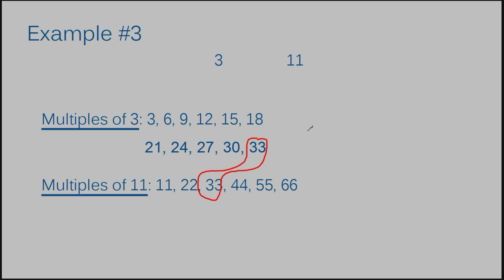I didn't have to list the extra multiples of three underneath — they could have continued out on the same line. I listed them underneath so you could see these were extras I had to add because we didn't have enough originally. If you were to continue your multiples on the same line, that would be totally fine. The answer to example number three is 33.